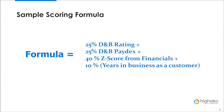Here is a very simple example of a scoring model. As you can see in this model, I am relying a lot on external agency data. From DNB we can get the DNB rating, the Paydex score, number of employees, average high credit with other customers, and a recommended credit limit. Based upon your business requirements, you can go through the DNB report and pick and choose what variables you want to use. The next variable is the Z-score from financials — some agencies will do the calculation for you. Finally, I have given a very small percentage to the number of years the customer has been working with you.